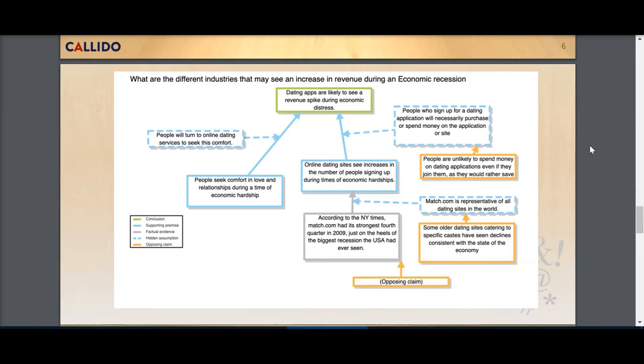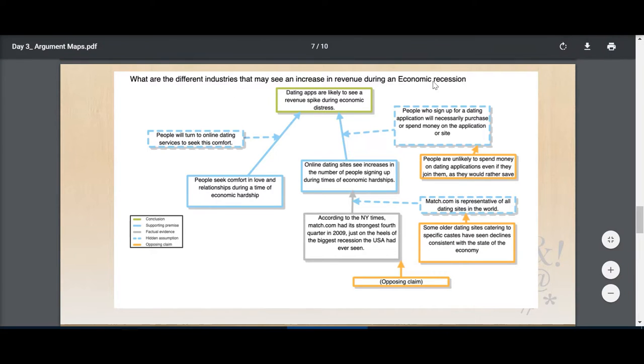Hi, this is a quick video on how to use the argument mapping extension from Calido. A quick recap of what an argument map is: it's a simple way of visualizing any argument.